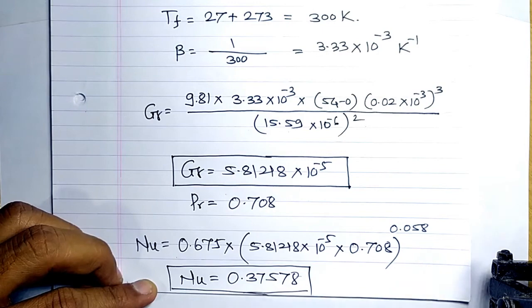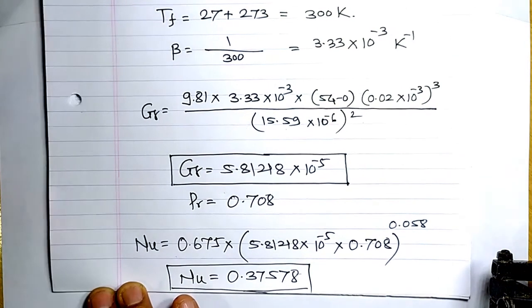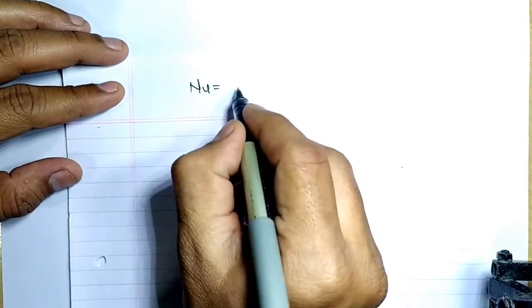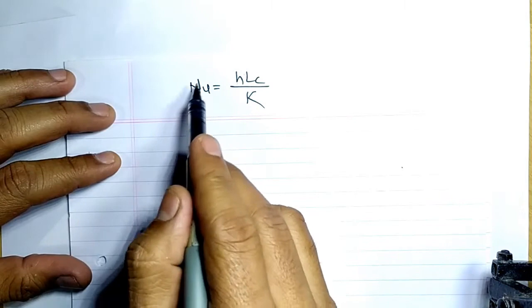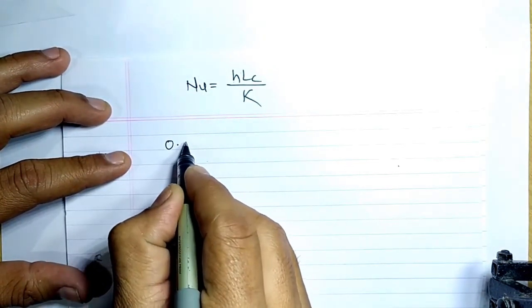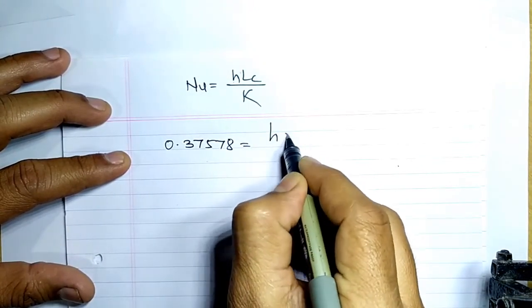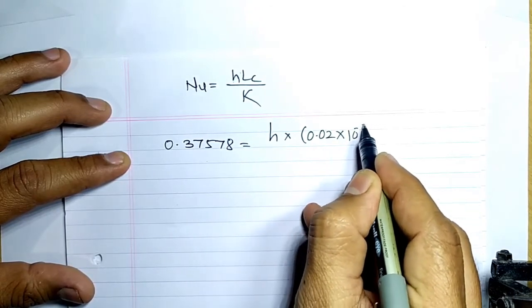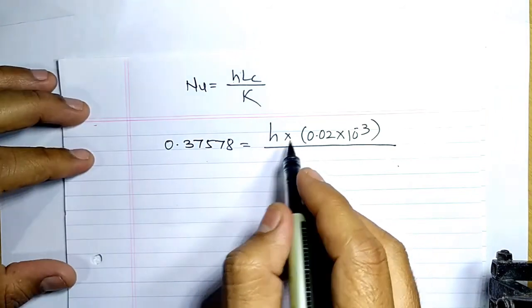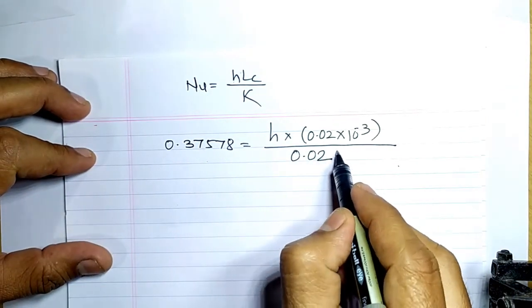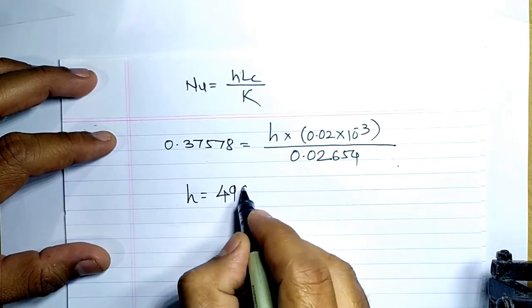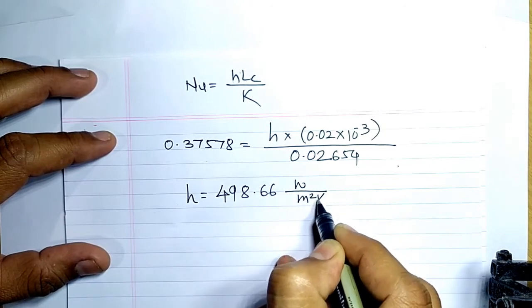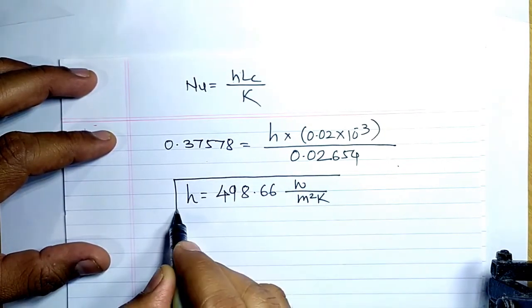We determined the Nusselt number to find h. Using Nu = h·Lc/k: 0.37578 = h × 0.02 × 10⁻³ / 0.02654. Solving for h, we get h = 498.66 W/m²·K.